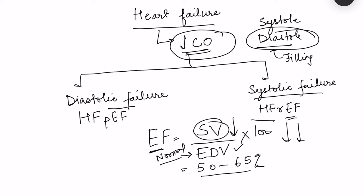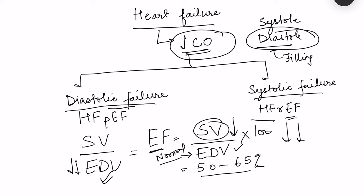In diastolic failure, the end diastolic volume itself reduces because filling is decreased. Since filling is less, the amount of blood going out of the heart also decreases, so stroke volume decreases as well. Since both decrease, the ejection fraction remains normal — that is preserved ejection fraction. So systolic failure is now called heart failure with reduced ejection fraction and diastolic failure is called heart failure with preserved ejection fraction.